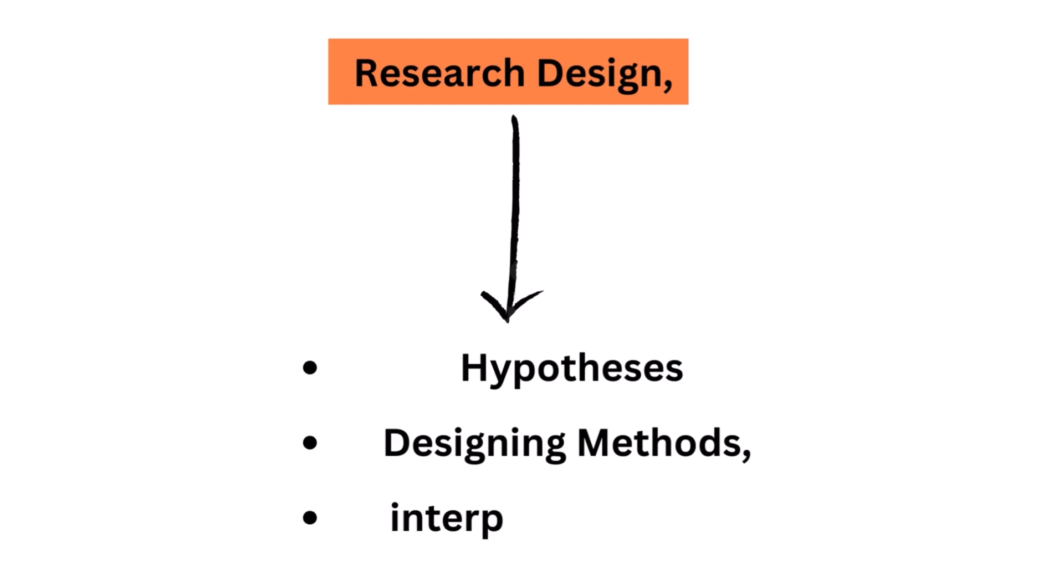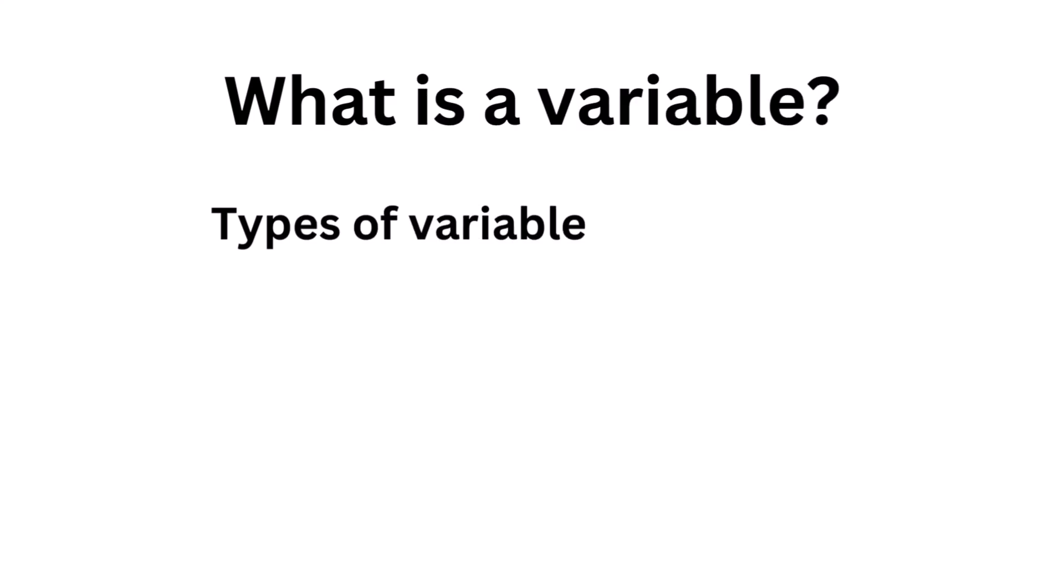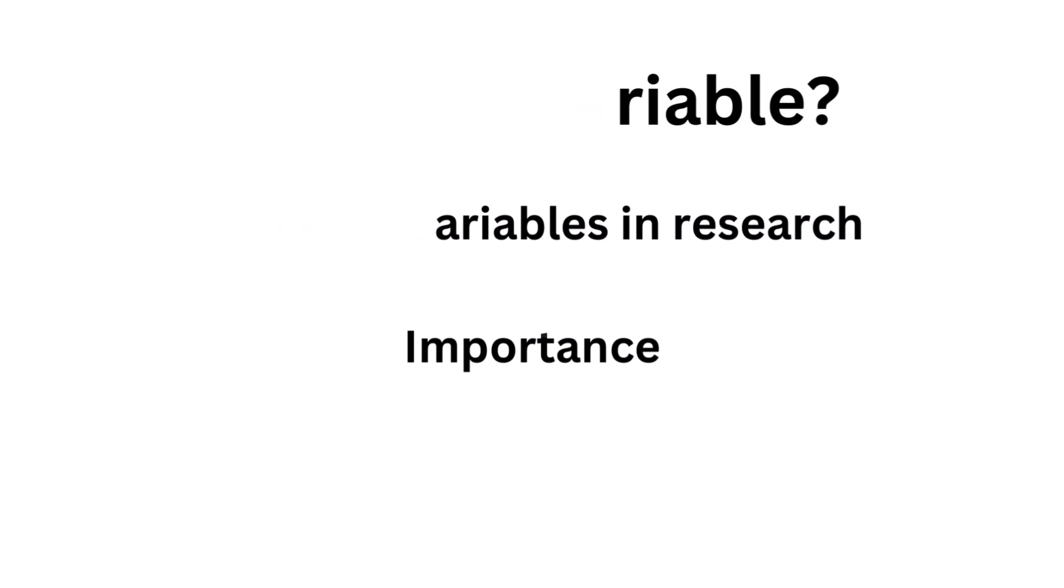In research design, understanding the types of variables and their roles is crucial for developing hypotheses, designing methods, and interpreting results. In this video, we define types of variables in research, including their definitions and examples, to provide a clear understanding of their use and significance in research studies.